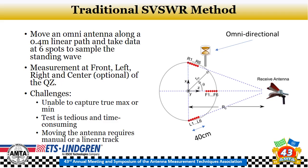A couple of challenges with this traditional approach: because you're only sampling six spots, the movement is typically only 40 centimeters long, and you are not able to capture the true maximum or minimum. As a result of the undersampling, the data can be very erratic. The test is also very tedious and time consuming because of all the different locations, polarizations, and heights.